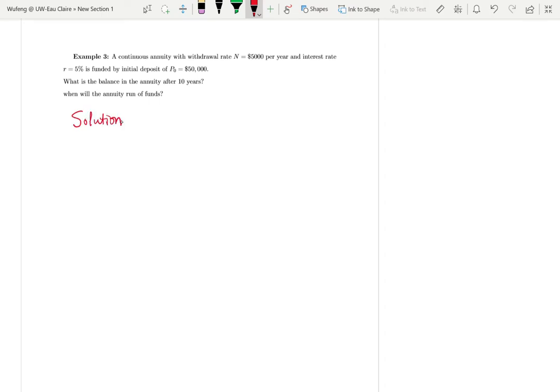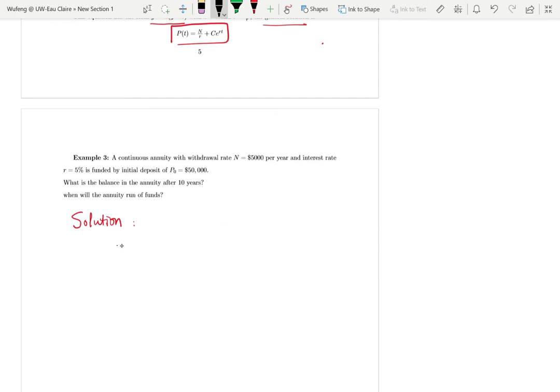The solution: the general solution based on our model is P(t) = N/r + Ce^(rt). We know that N equals 5,000 in this case, R is 0.05, and we need to find t at 10 years.